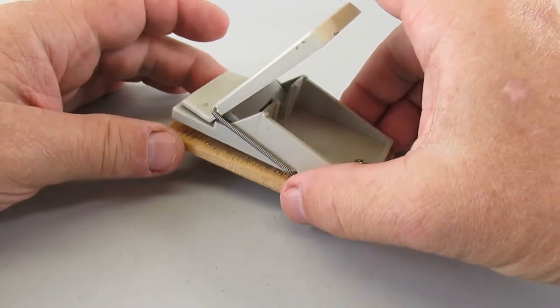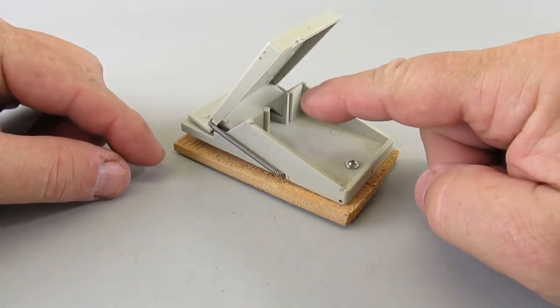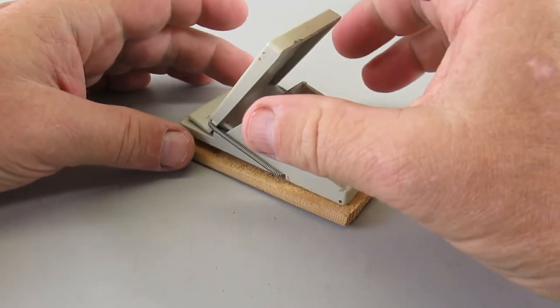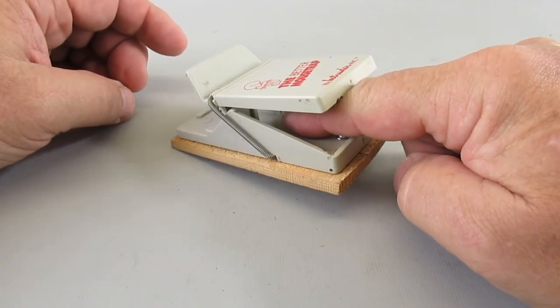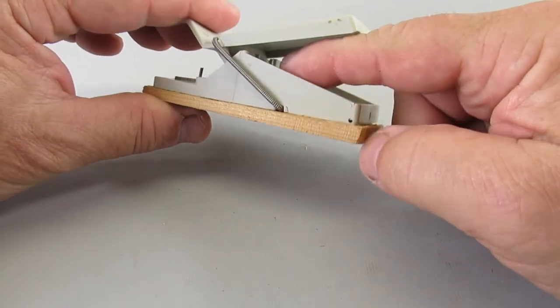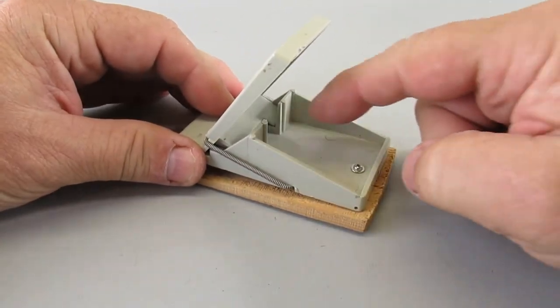This little nail pushing up here is what's going to trigger the Better Mousetrap when the mouse actually goes in the cavity. If I set the trigger just very light with its weight, it should be enough to get that trigger.